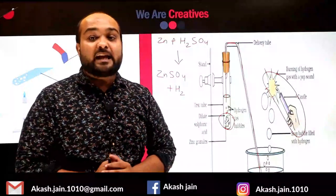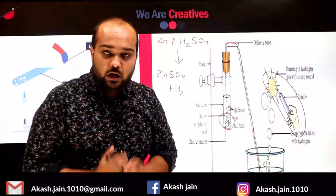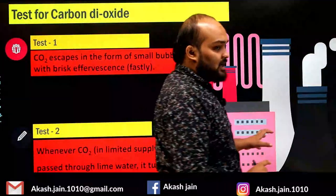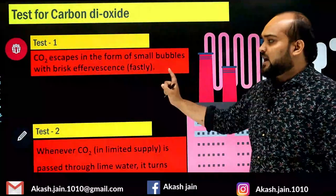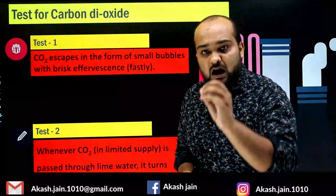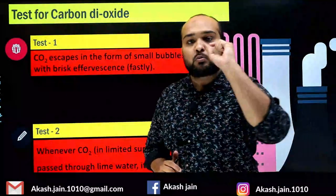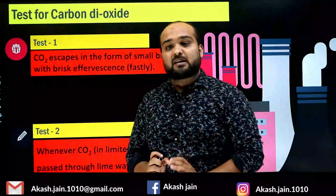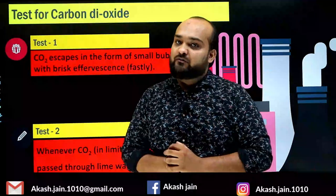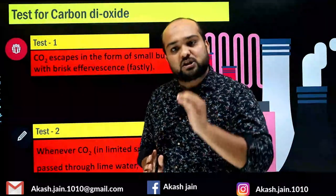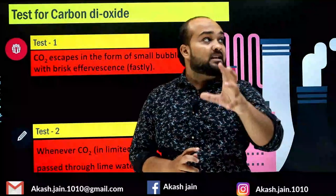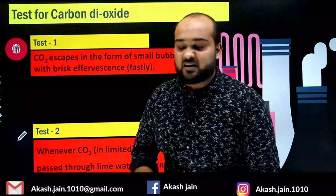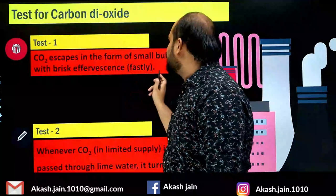Now we move to the test for carbon dioxide gas. Test 1 for carbon dioxide: when CO₂ gas is released, it creates bubbles. But compared to hydrogen bubbles, carbon dioxide bubbles are smaller in size and escape very fast — this is called brisk effervescence. The escaping tendency is very fast.